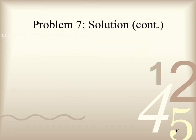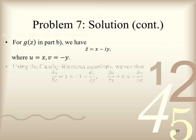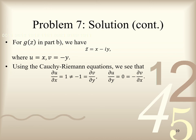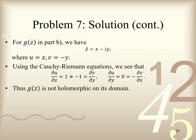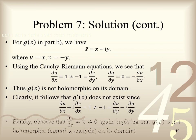Moving ahead, for g of z in part B, by definition it equals x minus iy, where u equals x and v equals negative y. From the Cauchy-Riemann equations, it follows that the partial derivative of u with respect to x equals 1. But this does not equal the partial derivative of v with respect to y, which is negative 1. On the other hand, the partial derivative of u with respect to y and the negative partial derivative of v with respect to x are both equal to 0. Both sets of equations are not satisfied, and thus g of z is not holomorphic on its domain. Clearly, it follows that g prime of z does not exist, since from the limit definition of the complex derivative, computing the limits in the horizontal direction and the vertical direction in the complex plane gives different results for this function. Finally, observe that the partial derivative of g with respect to z bar equals 1, which is not 0, again implying that g of z is not holomorphic on its domain.